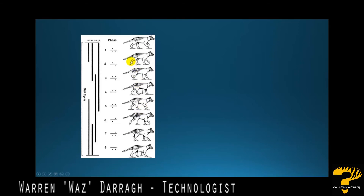What you can also see importantly here is that the heel at no stage in the walking gait is actually touching the ground. It might stop and shuffle forward, but in its general walking gait the heel is definitely off the ground.